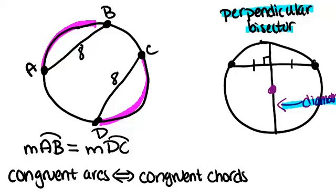Now, there's a similar property to that one, that if you have a circle, and in that circle, we have a diameter and a chord that are perpendicular, then it has to be the case that that diameter bisects the chord and bisects the arc.